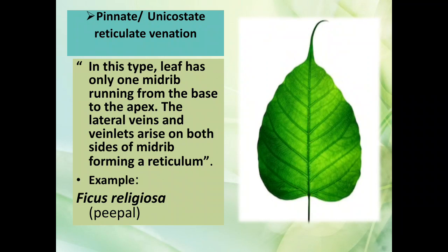Pinnate unicostate reticulate venation: in this type, the leaf has only one midrib running from the base to the apex. The lateral veins and veinlets arise on both sides of the midrib, forming a reticulate network. For example, peepal.